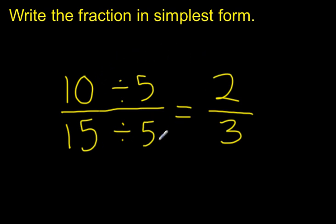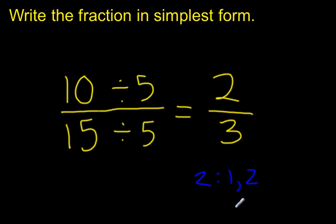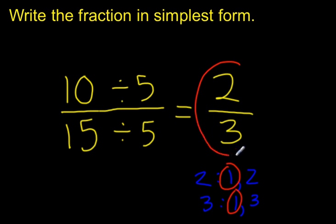Let's see what the equivalent fraction would be: 10 divided by 5 is 2, and 15 divided by 5 is 3. I've written the same fraction using a division relationship. 2 parts is much fewer than 10, and 3 parts in the whole is fewer than 15, so I have a simpler fraction: 2 thirds. Is it simplest form? The factors of 2 are 1 and 2; the factors of 3 are 1 and 3. The only common factor is 1, so this fraction is in simplest form.